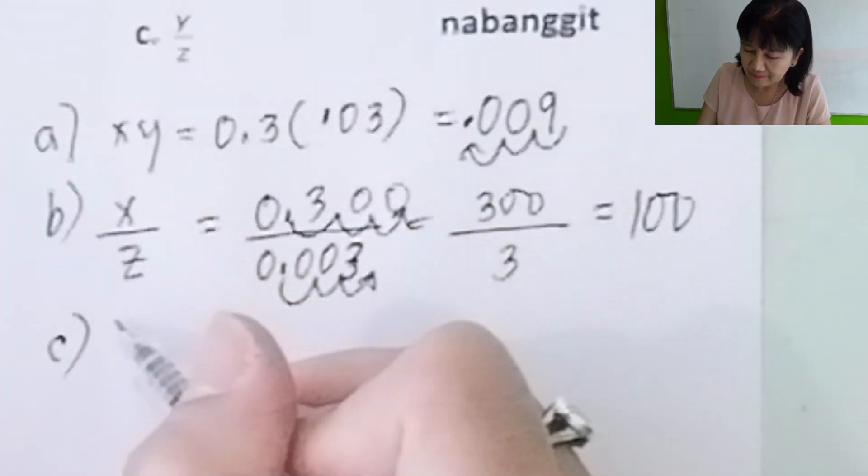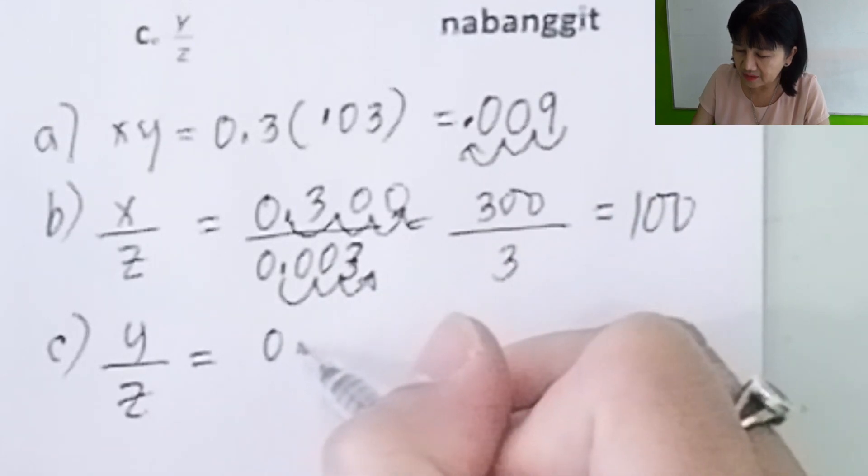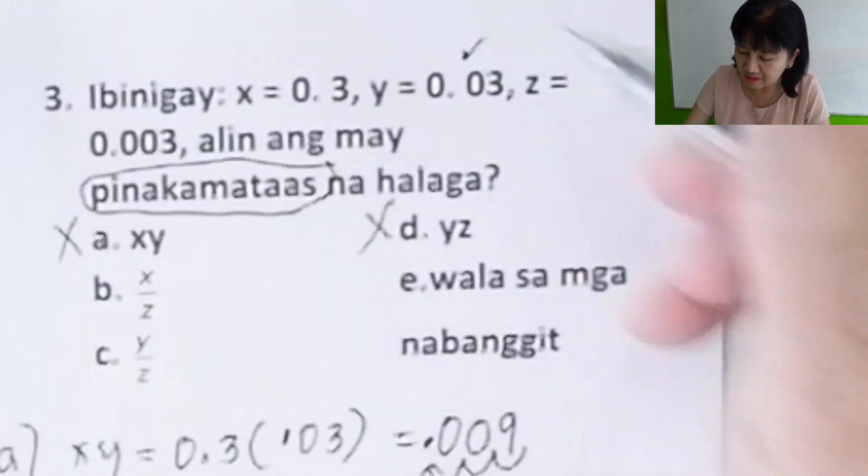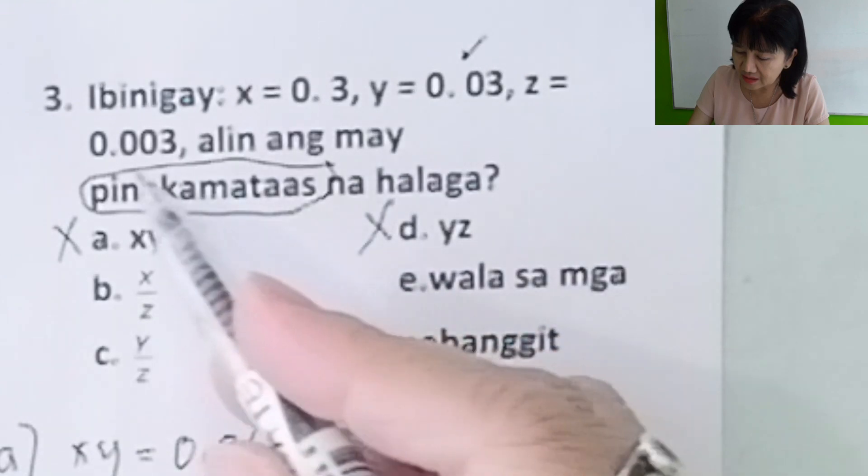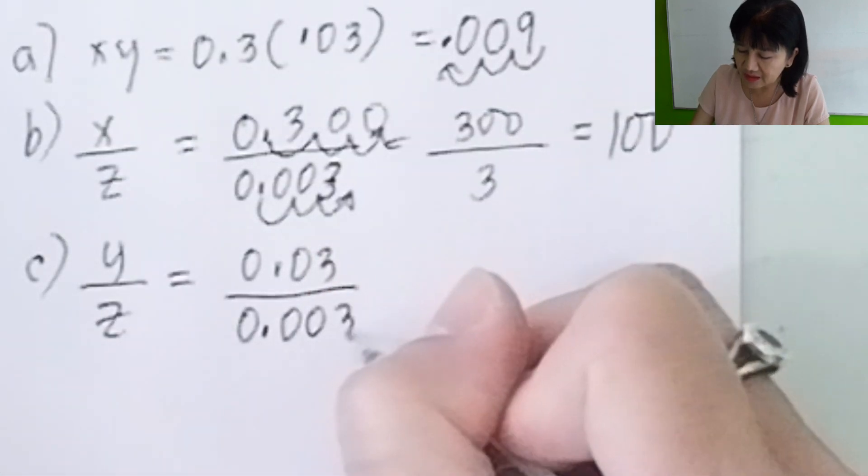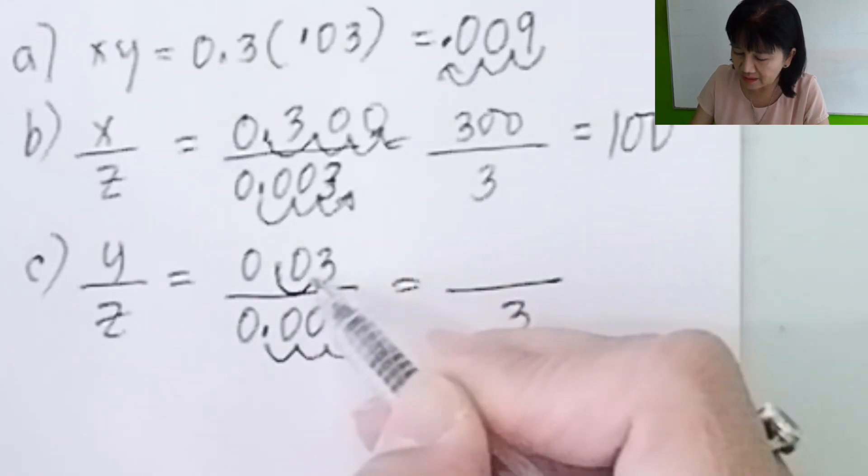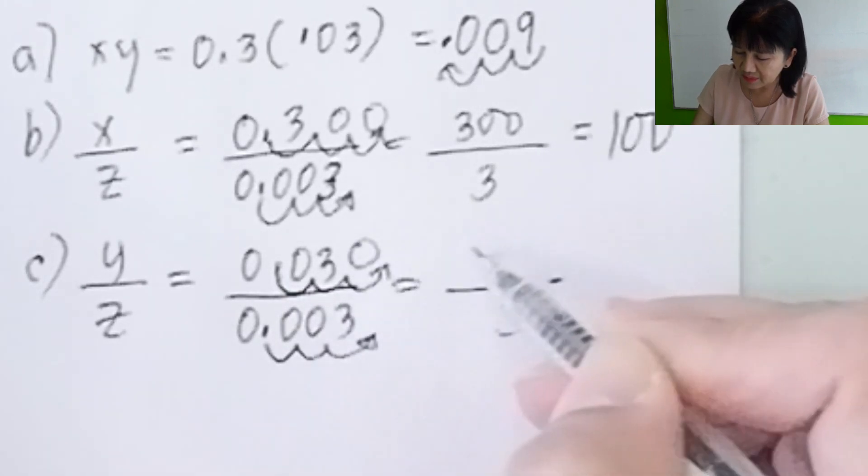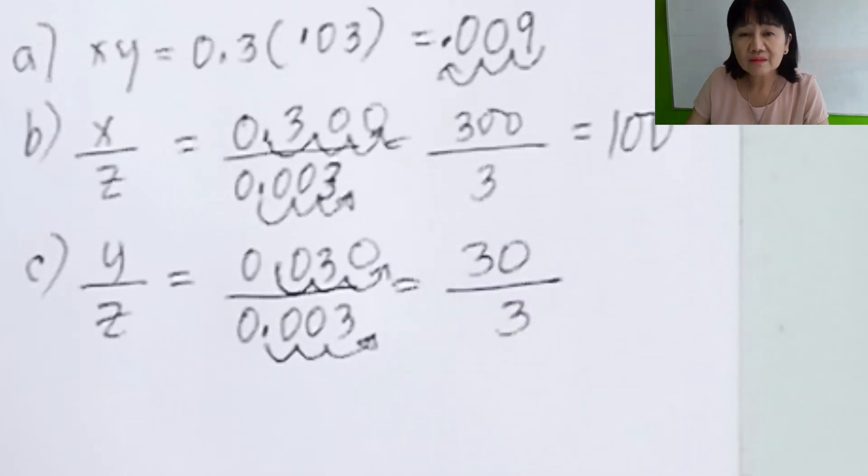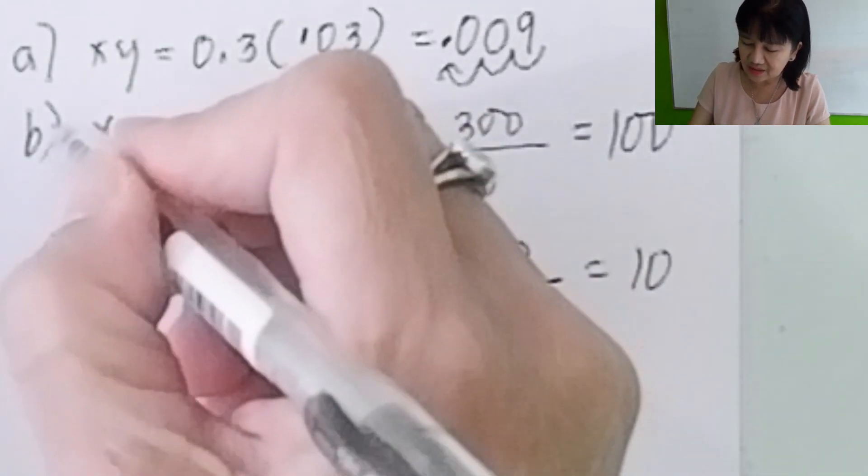Letter C, y over z: y is 0.03 over z, z is 0.003. Make this a whole number, move one, two, three, three places to the right. You also move this one, two, three, three places to the right. You have 30 over 3 is 10. So the correct answer is B.